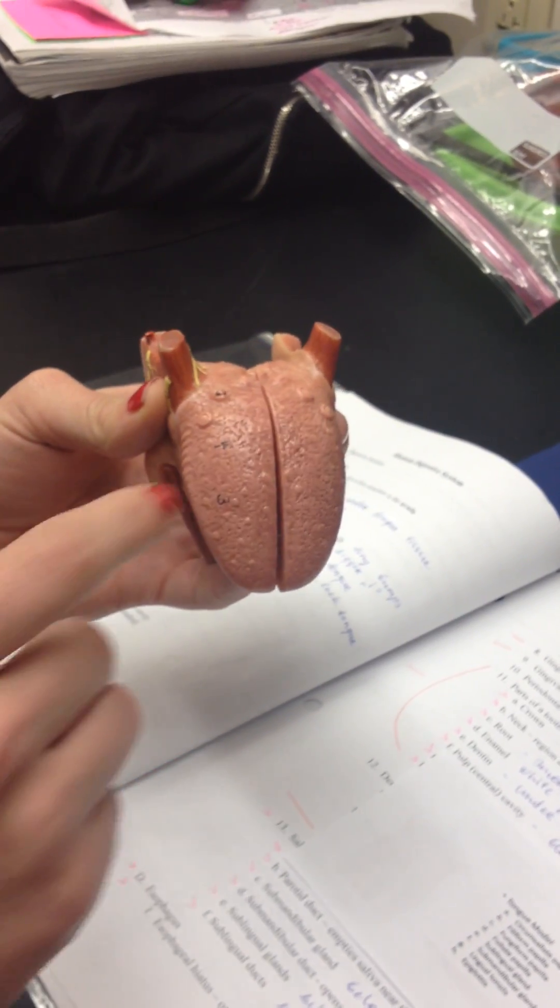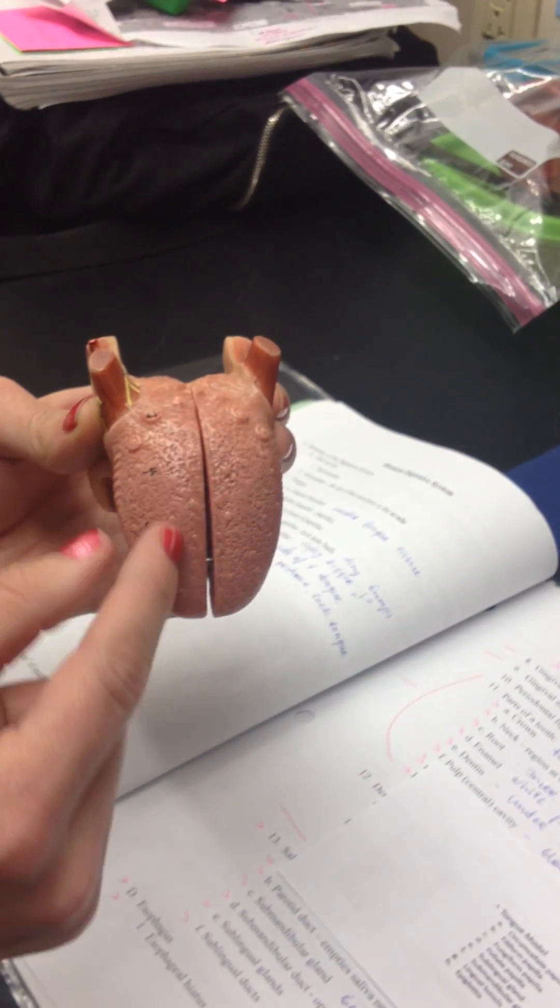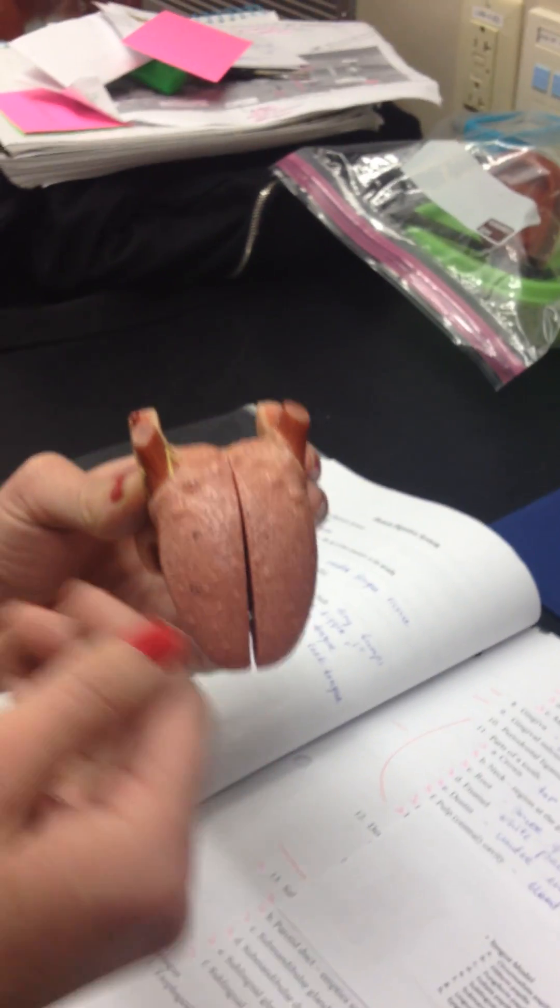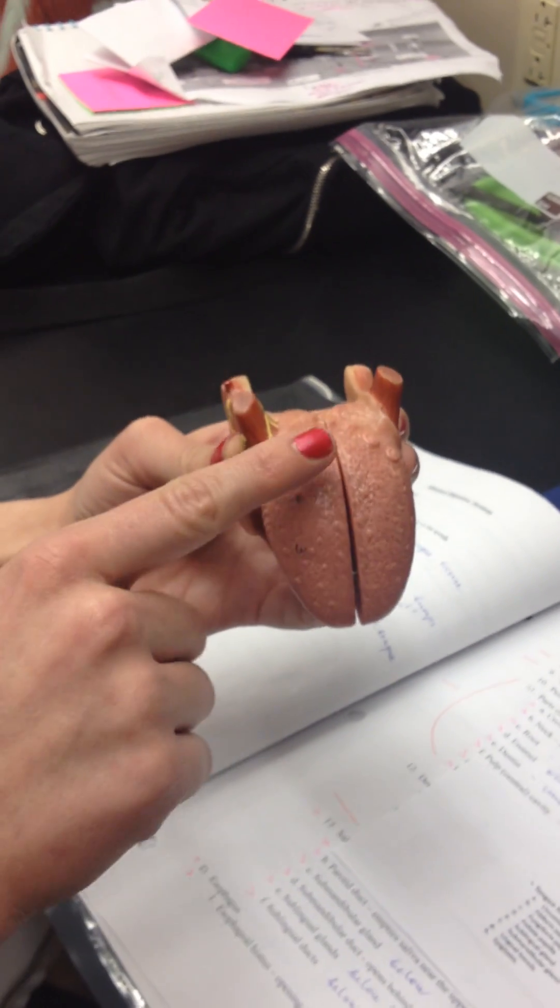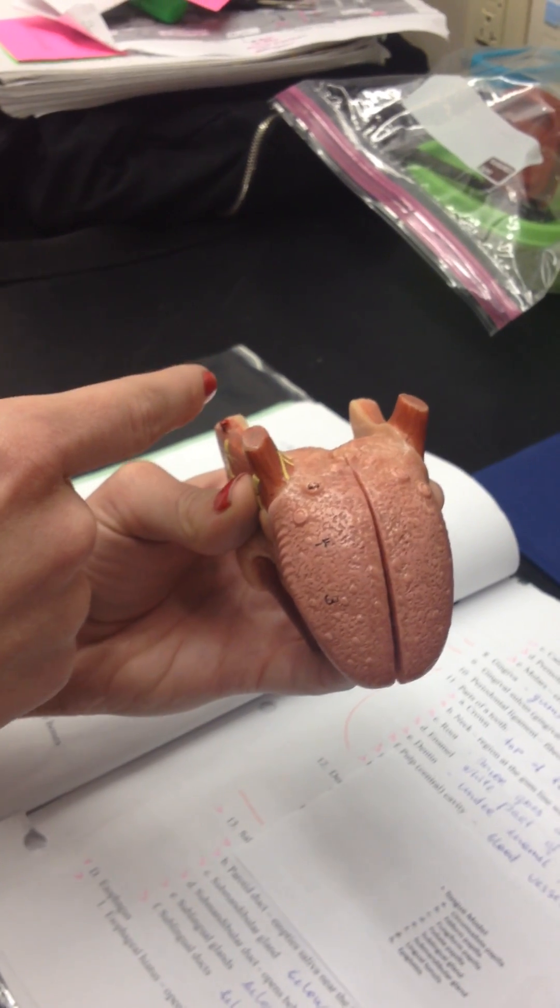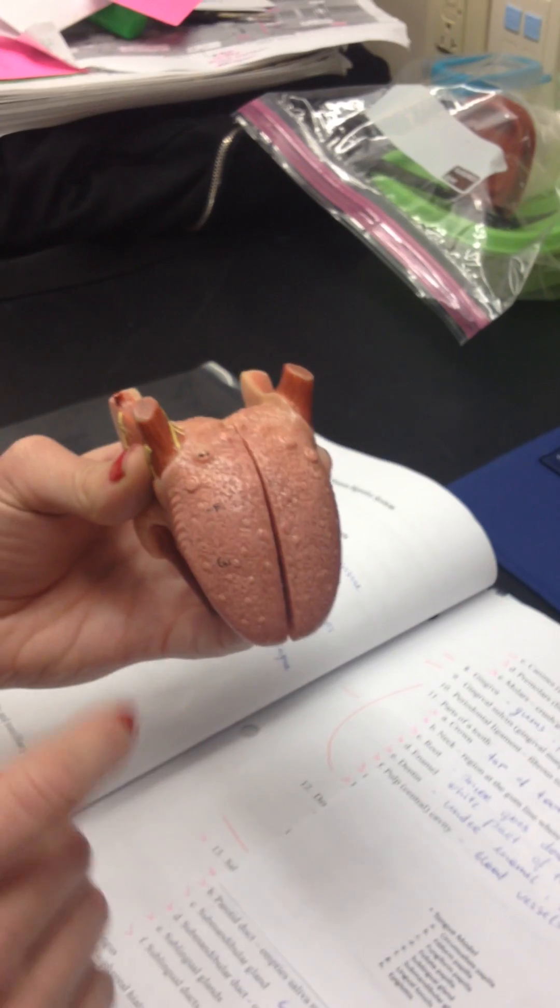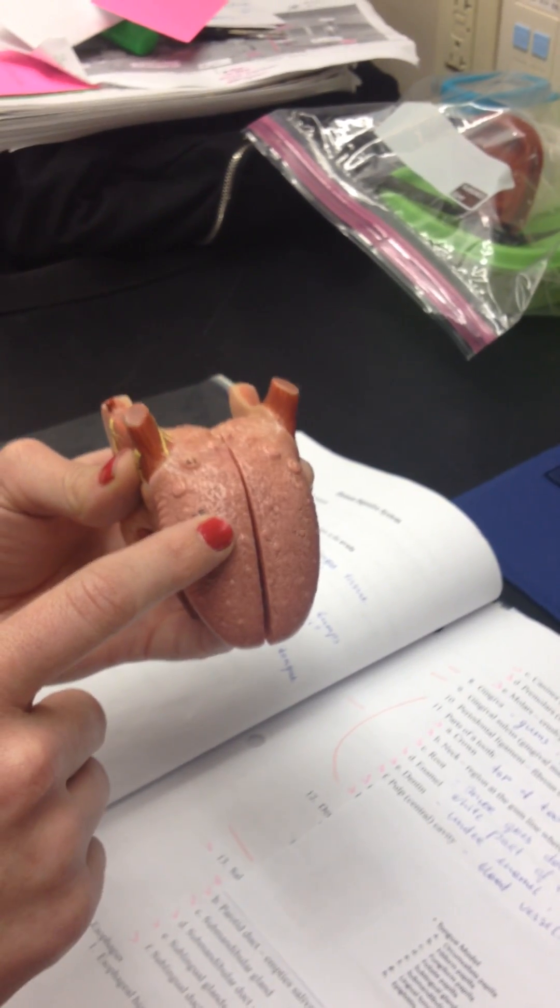The only papilla that doesn't is the one that's everywhere. It's the most numerous, and that's going to be called your filiform. Filiform means it fills up the tongue. That's what gives your surface texture of your tongue because you don't want a smooth surface. You want to be able to throw food or air to the back of your throat, so you need those raised elevations. The only thing about filiform is it does not have taste buds.